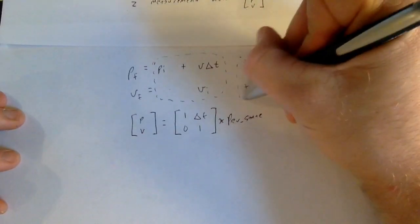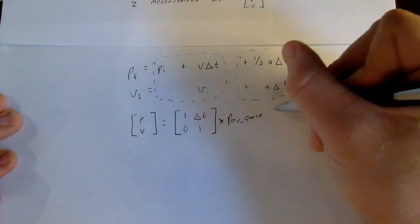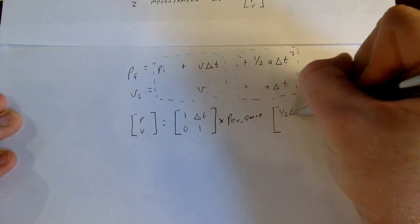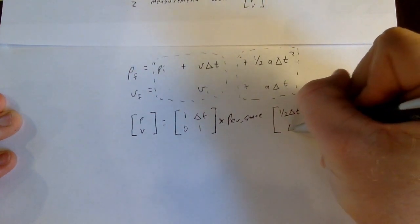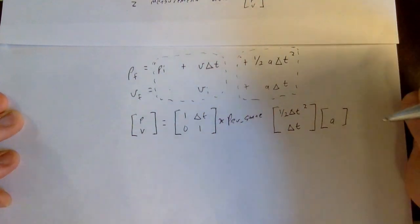Now if we want to open over here, that was basically assuming zero acceleration. Now if we assume input acceleration, turn this into a matrix as well, and we would get one-half delta t squared and we would get delta t, multiplied by our input acceleration.